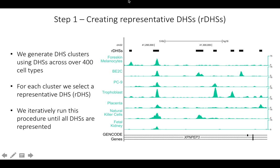When we looked across the genome, we can see that a lot of these sites are fairly consistent across different cell types. These are six different randomly surveyed cell types. As we can see, even across, for example, placenta tissue compared to natural killer cells, the regions of DNase hypersensitivity tend to be fairly consistent between the cell types. We used this fact to create what we're calling representative DHSs.